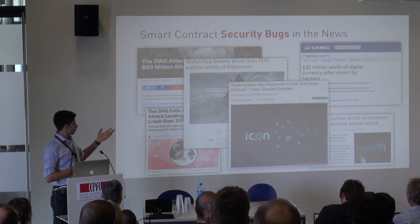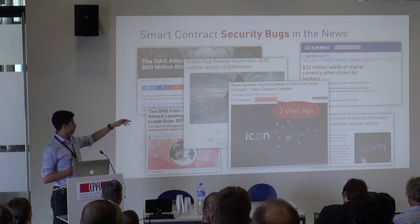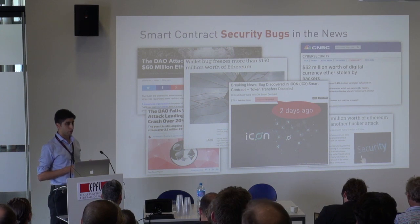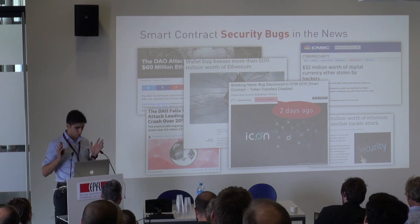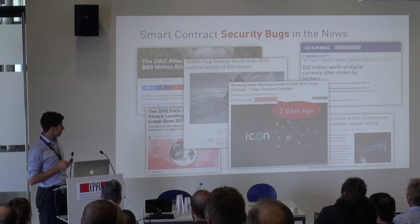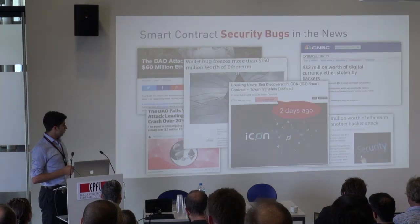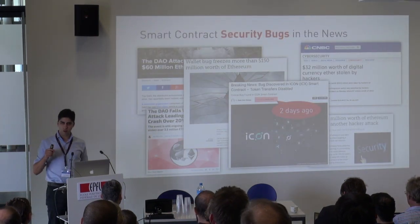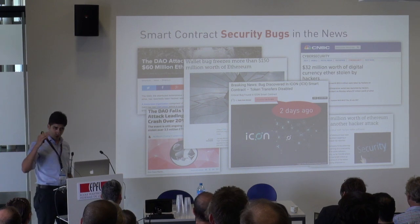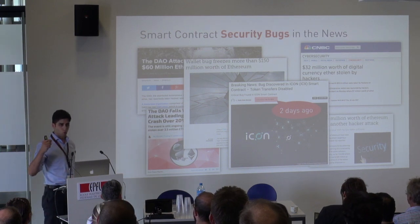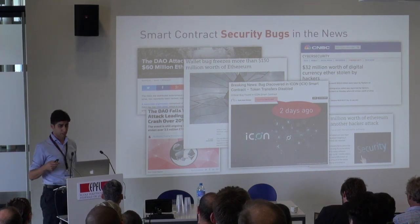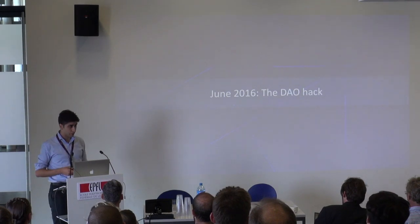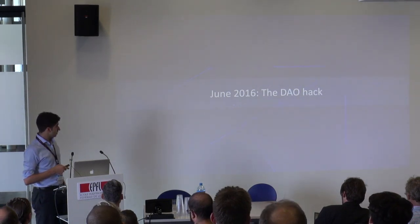These attacks keep appearing over and over. Just two days ago — from Saturday — there was another huge bug in one of the big smart contracts in Ethereum. It's a pressing issue that we really need to figure out how to do a better job at securing. I'll walk you through these security issues at the code level so you can see exactly what goes wrong, and from there I'll show how we can detect them. We'll start with the DAO bug.